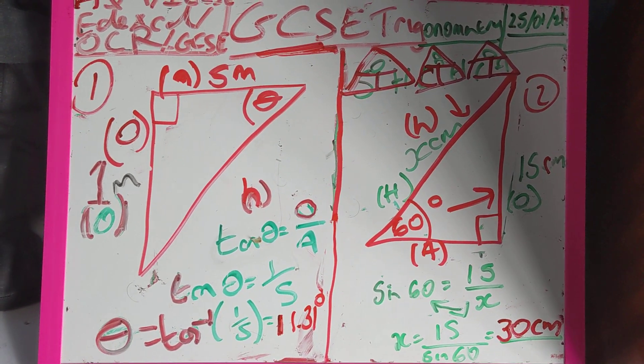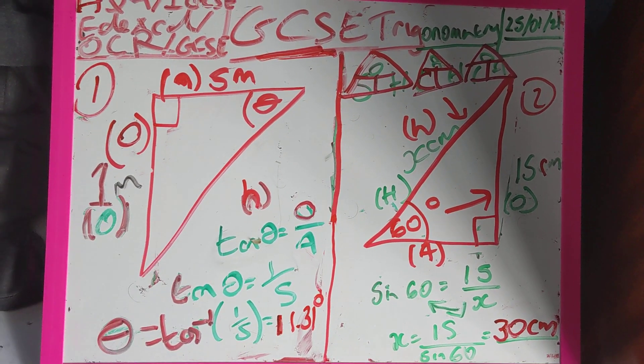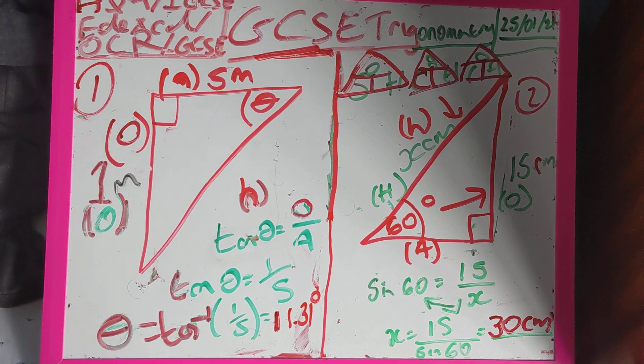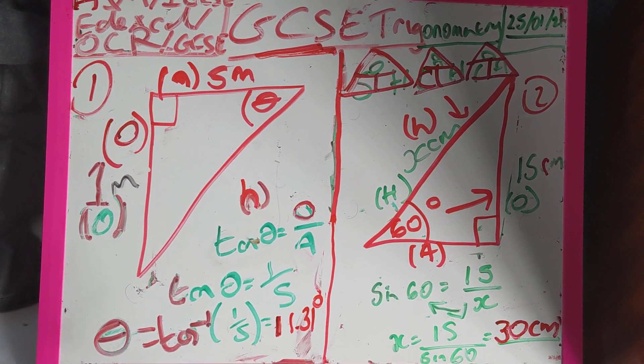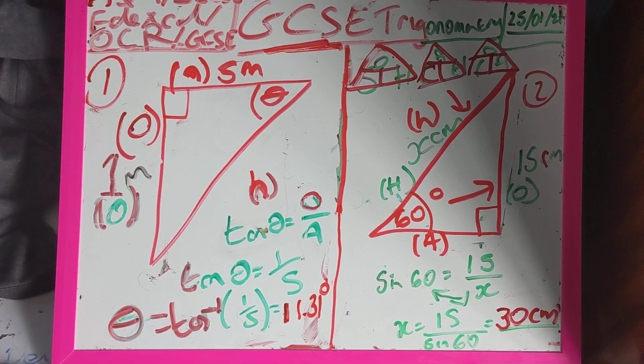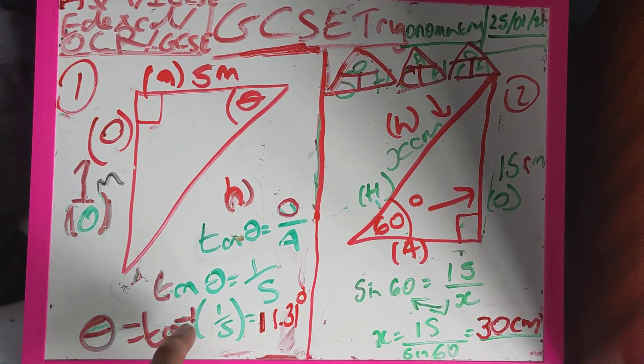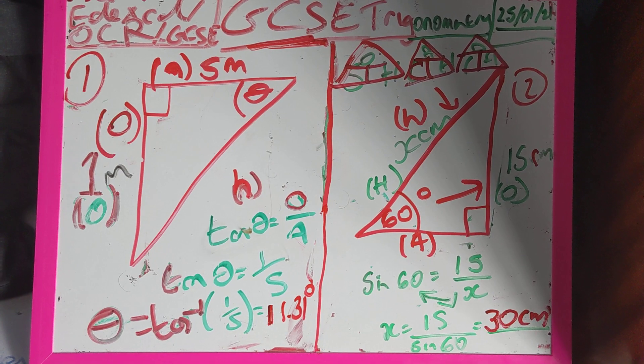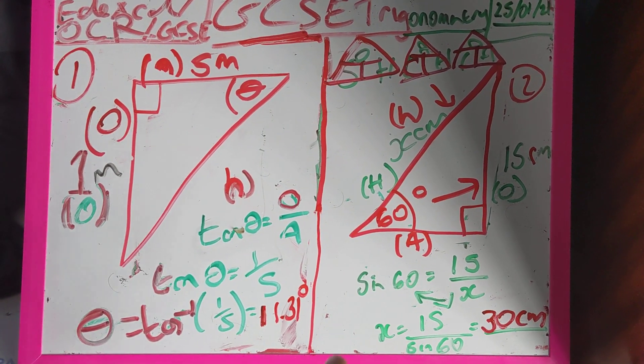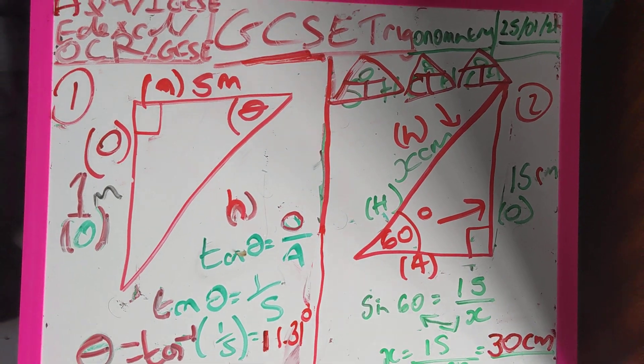To work out theta it is going to be inverse tan. So the opposite of doing tan of an angle is to do the inverse tan, or for those of you studying A-level maths it might be written as arc tan of this case. So it's tan inverse of one over five, put it into your calculator and then I get 11.31 degrees to 2 decimal places. So that's my answer for example one.